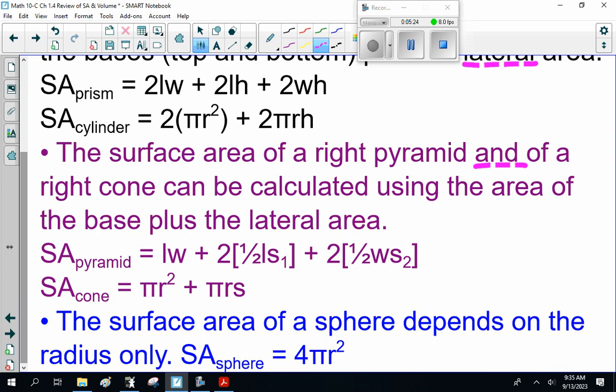The surface area of a right pyramid and of a right cone can be calculated using the area of the base, plus the lateral area. Now, if it's a pyramid, this is a fancy formula talking about if the two sides are a different length. We didn't do one of those. Poop, I'll do one of those next class. Now, the surface area of a sphere depends on the radius only. So, surface area is 4πr².